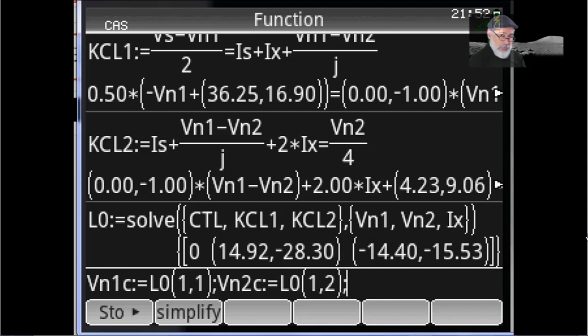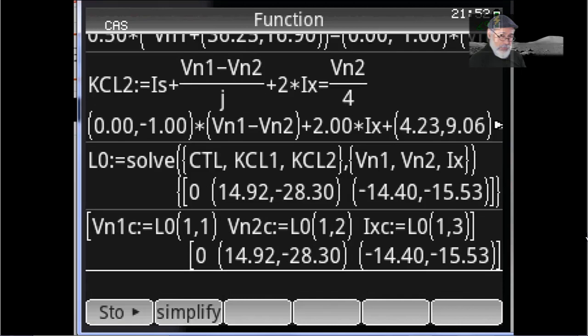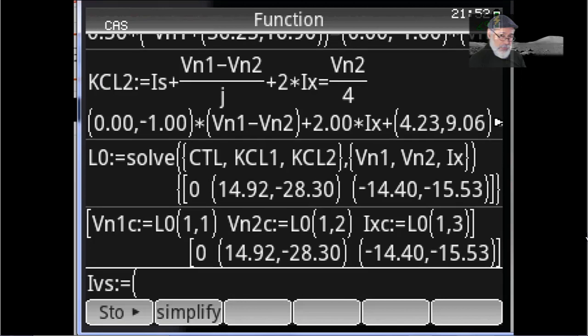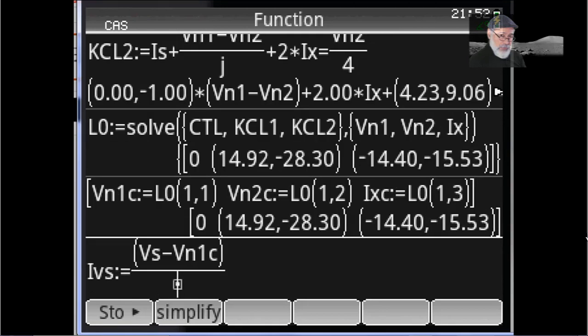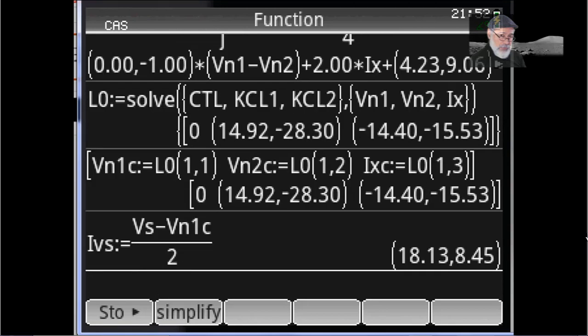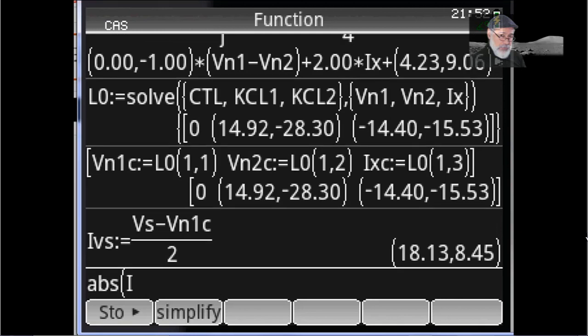I am giving a name to the computed value Vn1, Vn2, and Ix. Vn1 computed is the first term of the list L0. Vn2 computed is the second value. And Ix computed is the third value. Why am I defining them that way? So that I can compute things like the current in the voltage source.